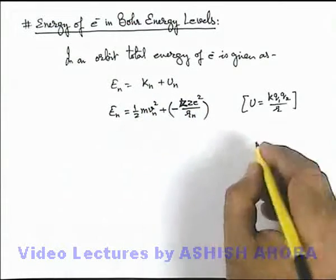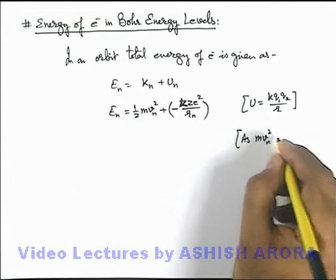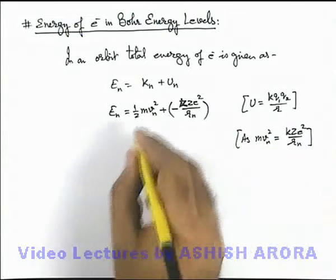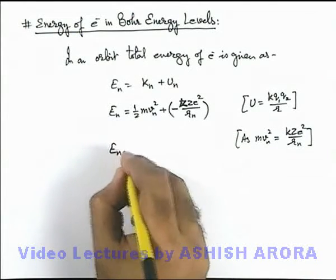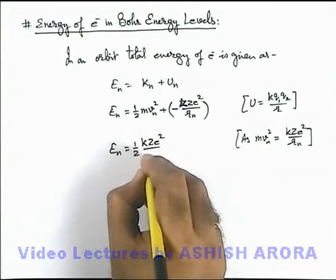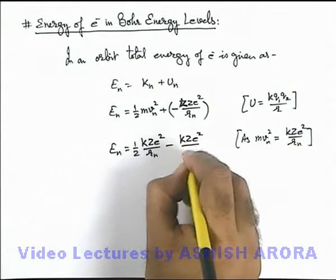And by first postulate as we know, m v_n square we can write as k z e square over r_n. We can substitute the value of kinetic energy as half k z e square over r_n minus k z e square over r_n.